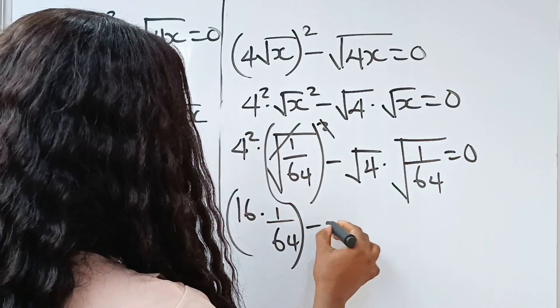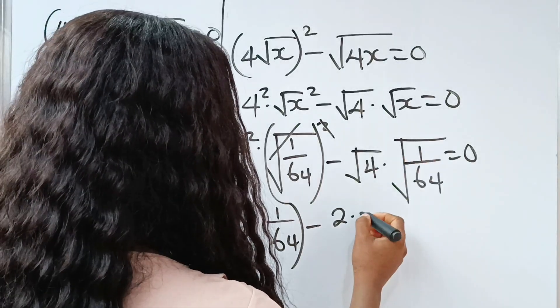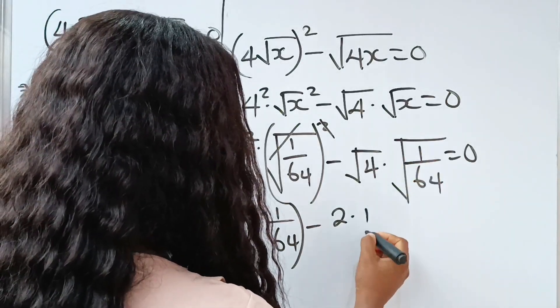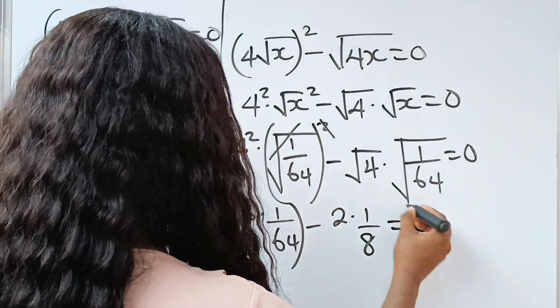Minus, now this is 2 multiplied by square root of 1 is still 1 while square root of 64 is 8 is equal to 0.